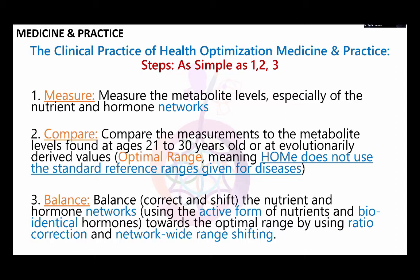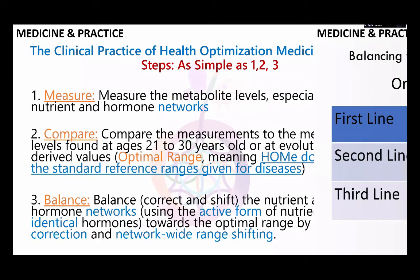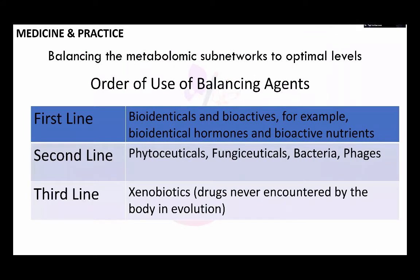Here's how we order the use of balancing agents. Our first line will be, of course, what your body uses. The second line will be plants, fungi, bacteria, and phages. And it's only in the third line that we actually use drugs, because many of the drugs we're using have never been encountered by the body in evolution.